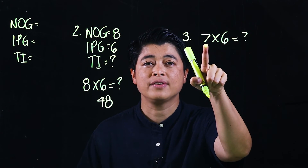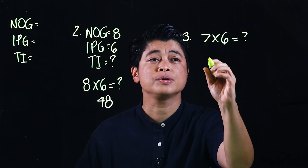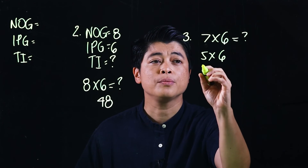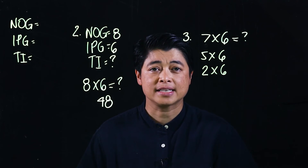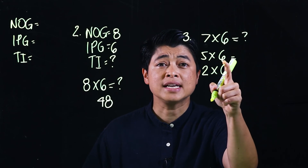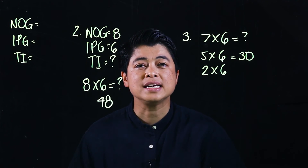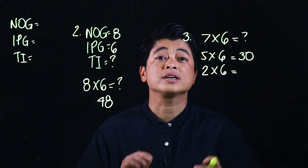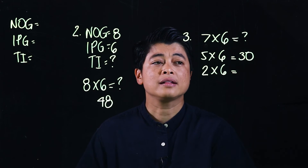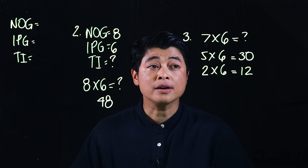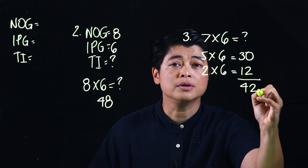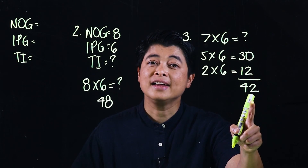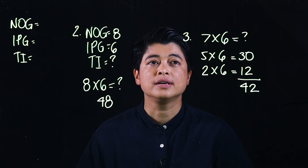The goal is to find the number closest to 7 that is between 5 and 10. Since 7 is closer to 5, we start with 5 × 6 = 30, because it's easy to count by fives. Since 5 is missing two more to reach 7, we add two sets of 6, which is 12. Together, 30 + 12 = 42, so 7 × 6 = 42.